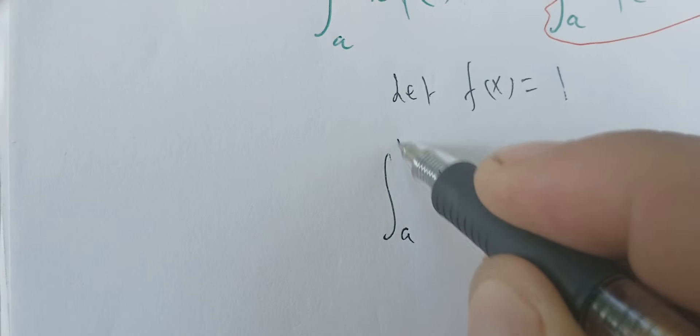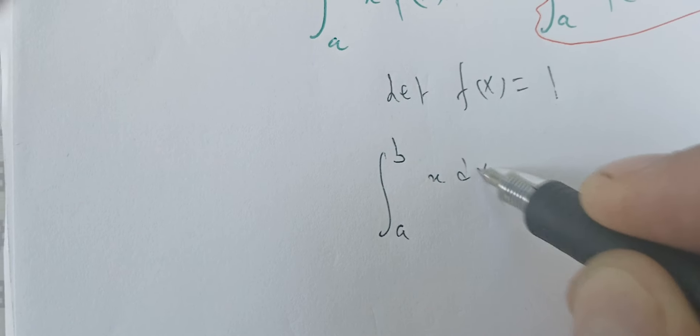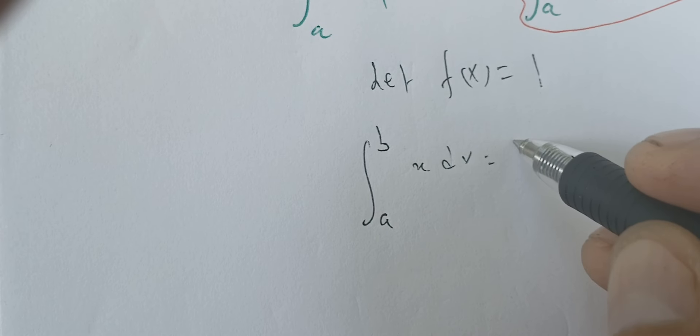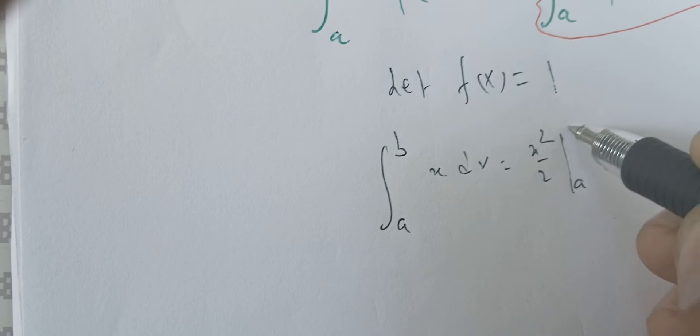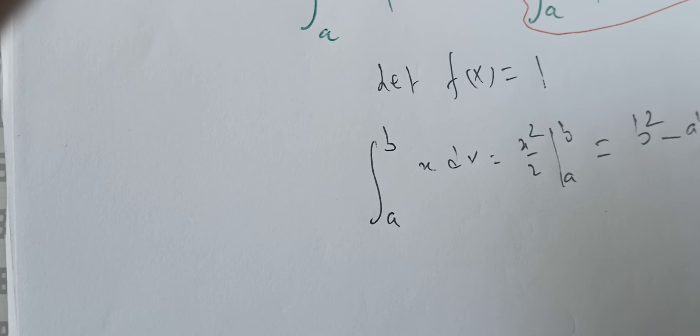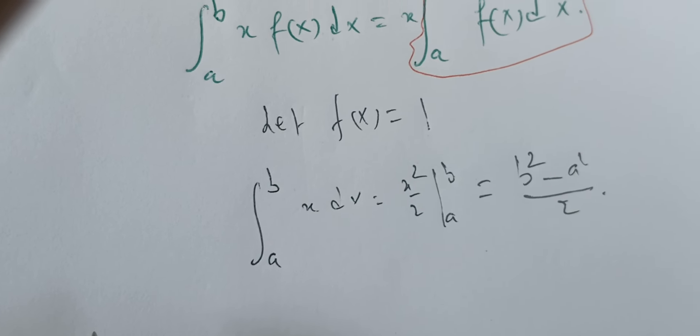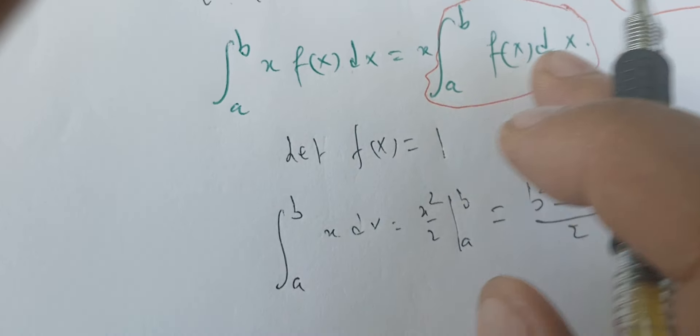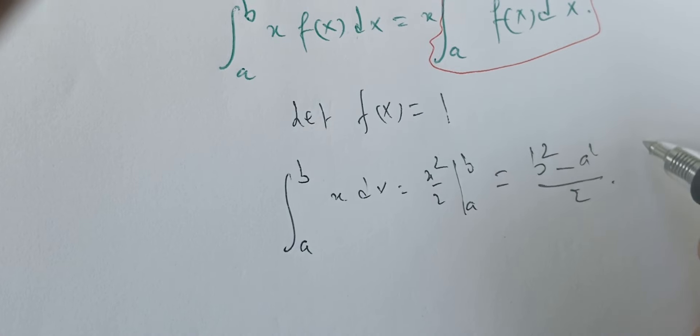On the left side, when we plug f(x) equals 1, we have the integral of x dx, and we know that this is x squared over 2 between a and b, which is b squared minus a squared over 2. Notice here that this is just a number.